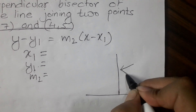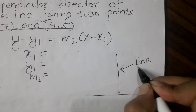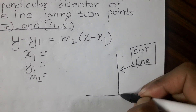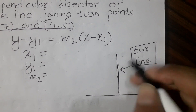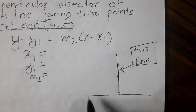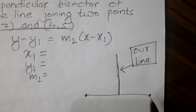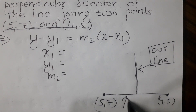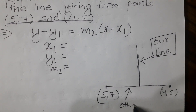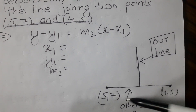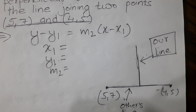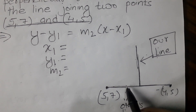We are supposed to find the equation of our line. To find the equation of our line, the coordinate and the slope should be given for our line. The coordinates in the question are related to another line — which is not our line — so that is the other line, which we can also call our helper line.